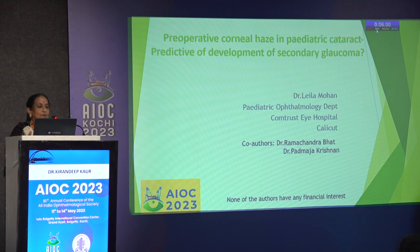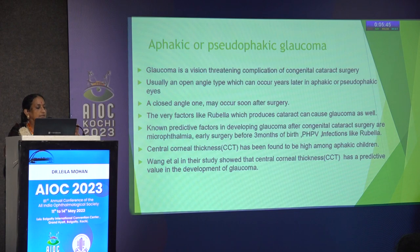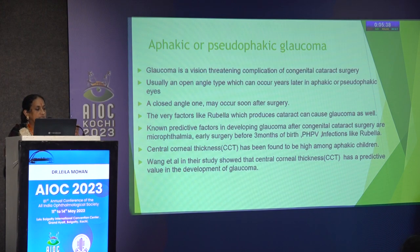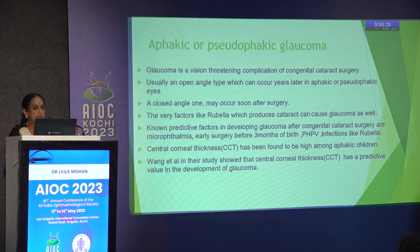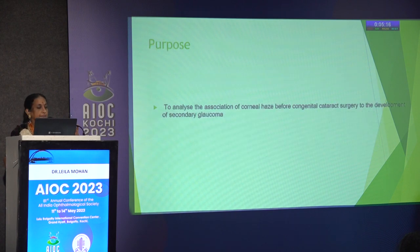The next presentation is on preoperative corneal haze in pediatric cataract: is it predictive of development of secondary glaucoma? Phakic or pseudophakic glaucoma is a vision-threatening complication of congenital cataract surgery, usually open-angle type occurring years later. Known predictive factors include microphthalmia, early surgery before three months of birth, PHPV, and infections like rubella and cytomegalovirus. Central corneal thickness has been found to be high among phakic children, with Wong et al. showing CCT has predictive value in glaucoma development.